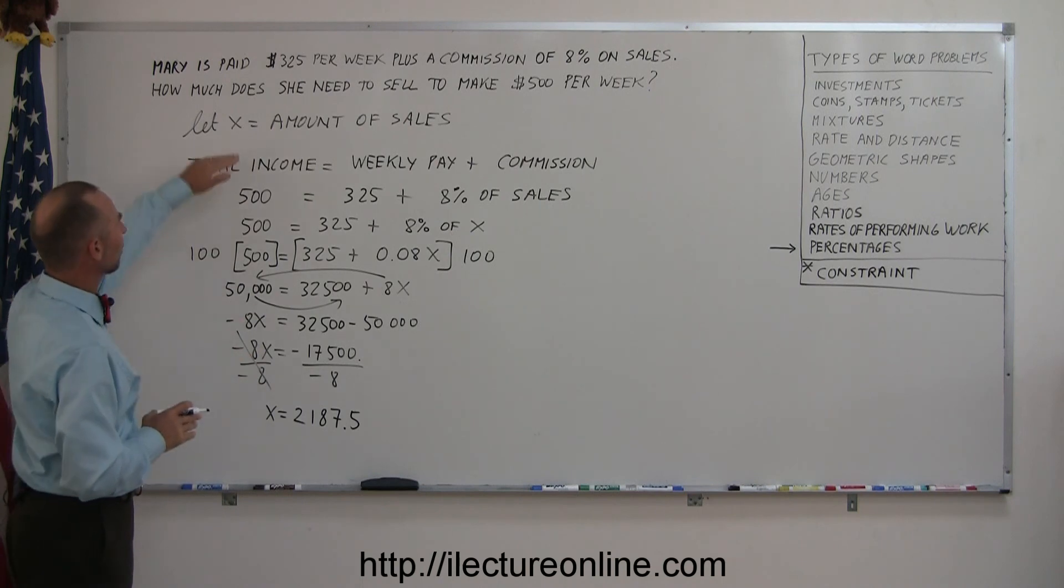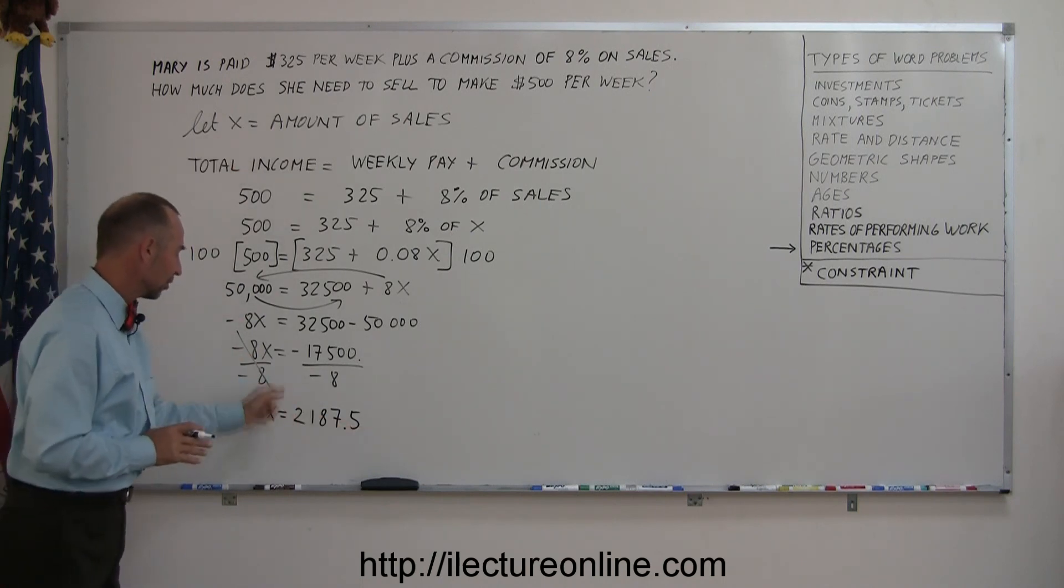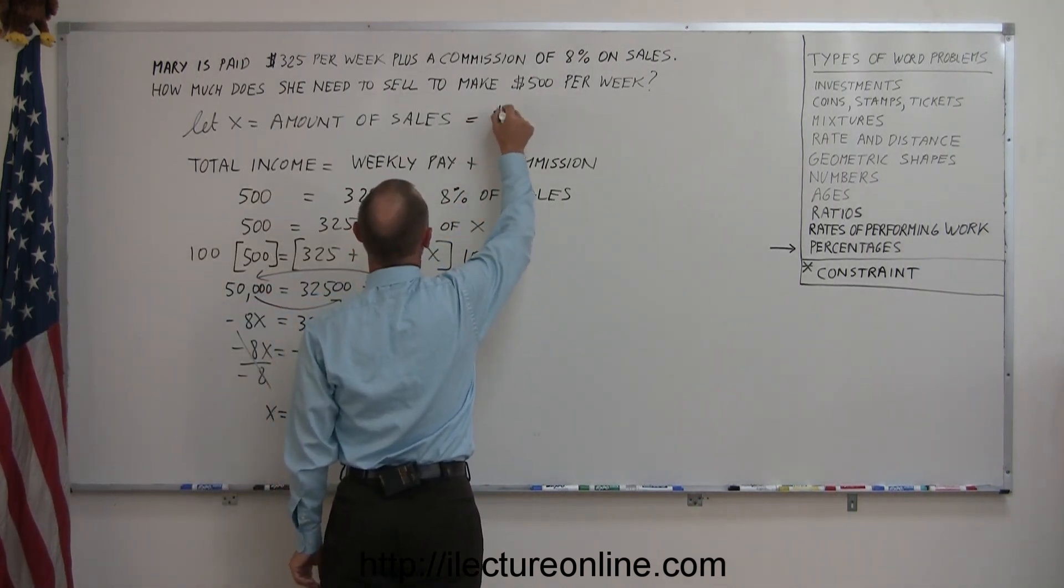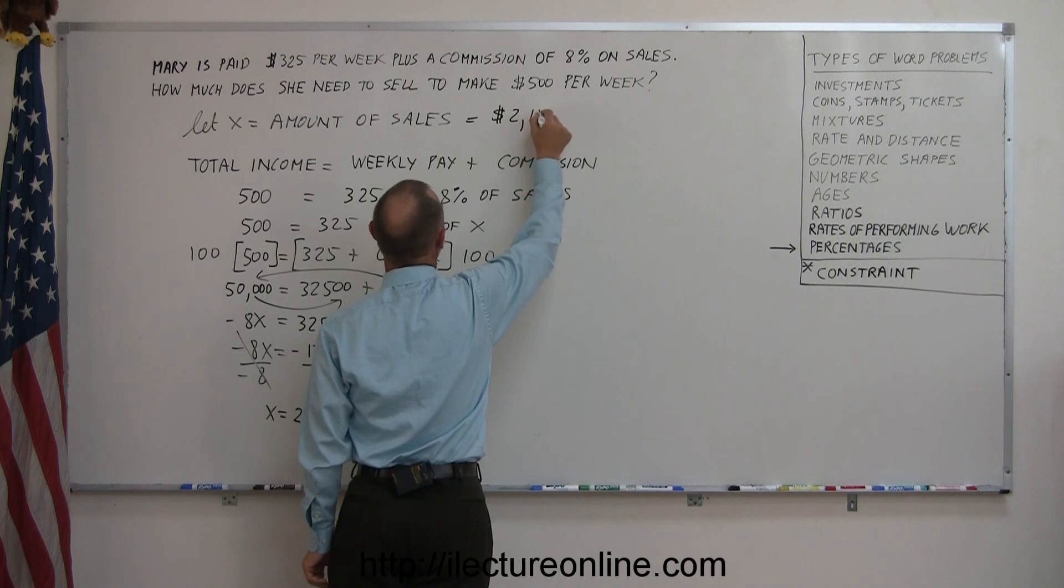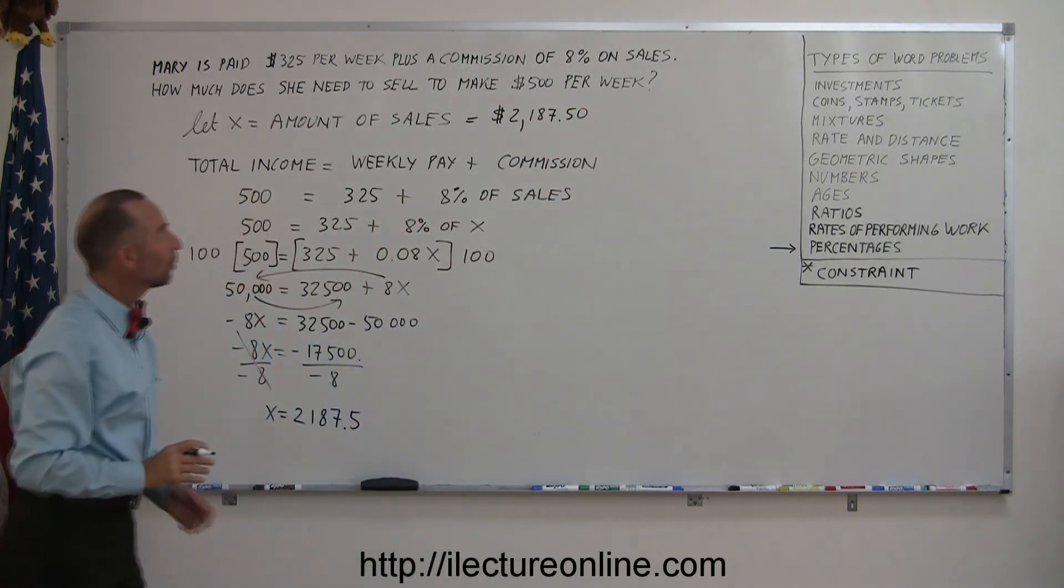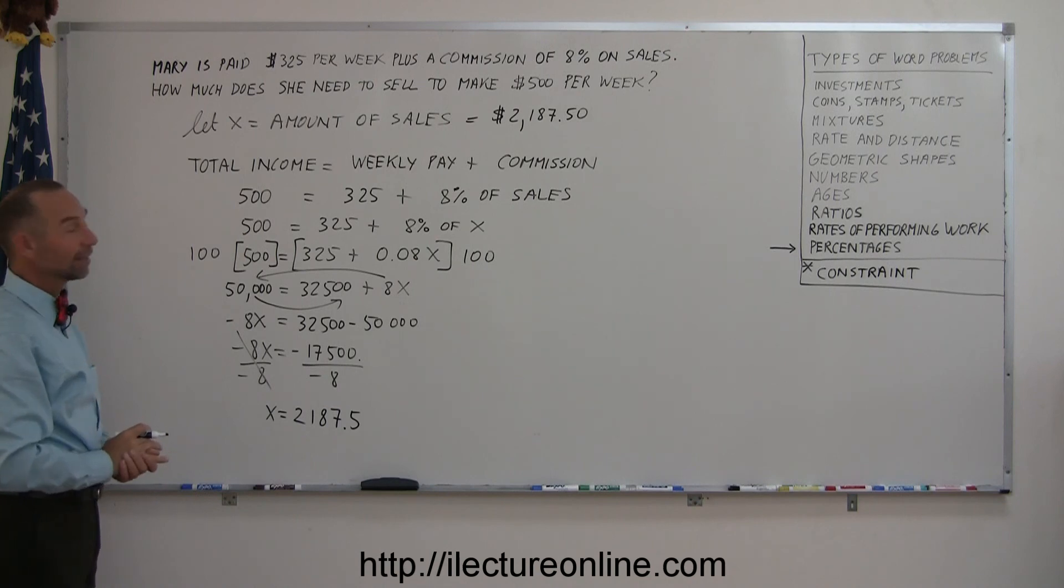Another way you could do that is longhand or just simply grab a calculator and solve for that number. Of course, x represents the amount of sales and that would be in dollars. So we end under zero, put a dollar sign in front of it. So this is equal to $2,187.50. And that would be the amount Mary would have to sell each week in order for her to earn $500.